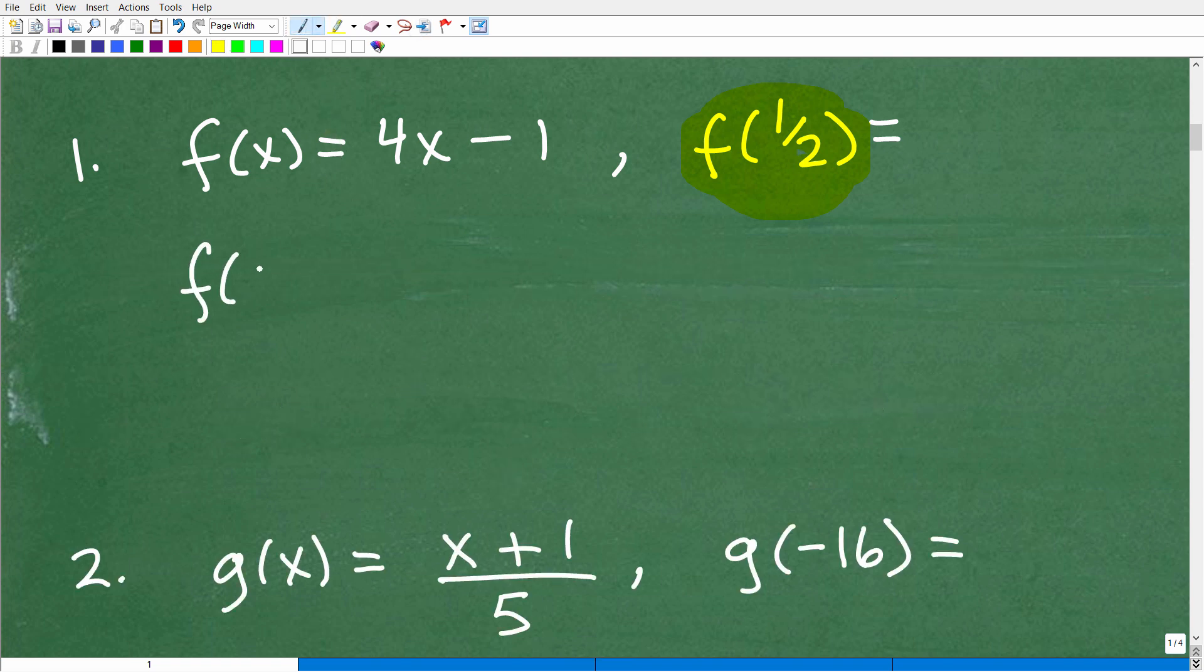I'm going to go ahead and do that now. So f of 1 half. Again, I'm going to replace this variable, the x, with the number, which is 1 half. So that's going to be 4, remember I'm plugging in with parentheses, times 1 half minus 1.